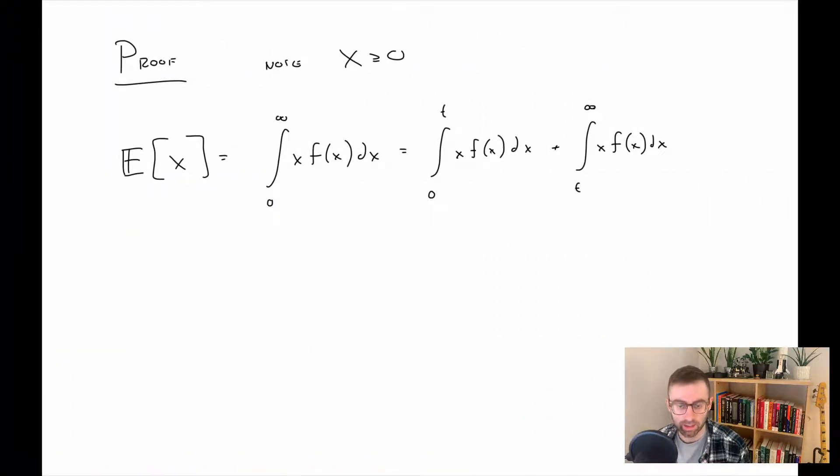Recall that we said x is a non-negative random variable, that is it takes values zero or above. So first step is we simply write out the definition of the expected value of x, and here we're assuming a continuous random variable but the idea would be very similar for a discrete random variable. Then we're going to split the integral into two. So instead of from zero to infinity, we're going to first go from zero to t and then from t to infinity. If we note this integral from zero to t, just because x is non-negative and the pdf here is obviously non-negative, this whole integral has to be non-negative, so that is greater than or equal to zero.